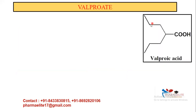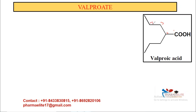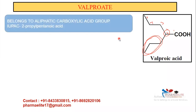Regarding the structure: it's quite easy. You have pentanoic acid, and on carbon number two, there is a propyl group attached — hence two-propyl pentanoic acid. That's the IUPAC name. It belongs to the aliphatic carboxylic acid class; the IUPAC name is 2-propyl pentanoic acid.